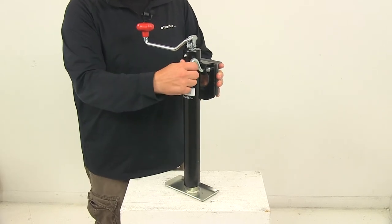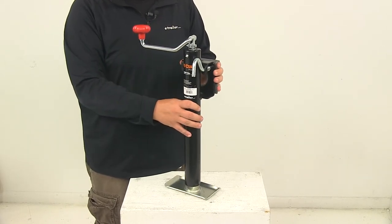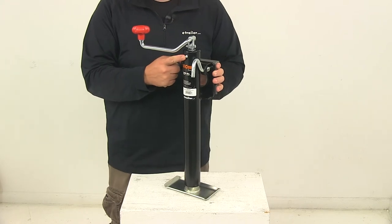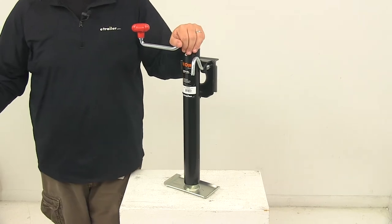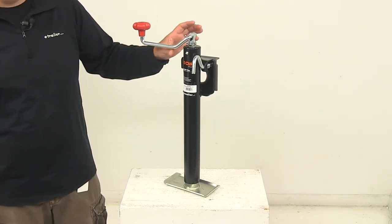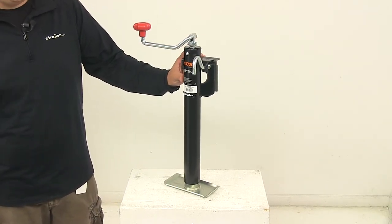And then that pull pin keeps the jack securely locked in place. Located right here is a built-in grease zerk. This allows for easy maintenance. Just hook up a grease gun and pump in the grease to keep the internal components lubricated and working as they're designed to.